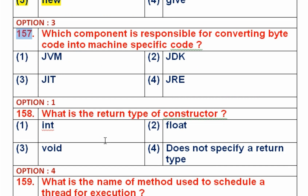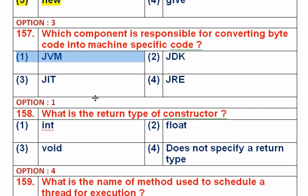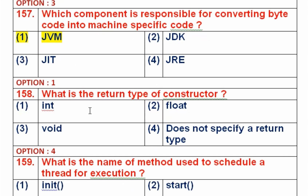Question number 157: Which component is responsible for converting byte code into machine-specific code in Java? Option 1 is JVM, option 2 is JDK, option 3 is JIT, option 4 is JRE. JVM stands for Java Virtual Machine, JDK is Java Development Toolkit, JIT is Just-In-Time compiler, JRE is Java Runtime Environment. Java achieves platform independence by converting source code into intermediate byte code, which is then converted into machine code by the JVM. So option 1, JVM, is the right answer.